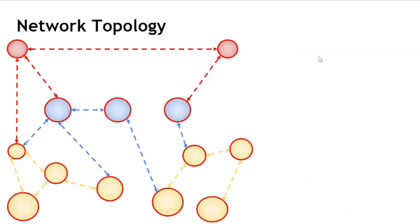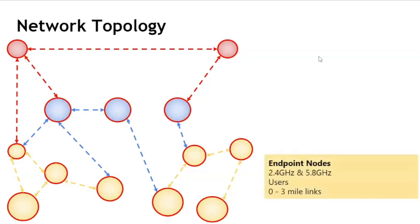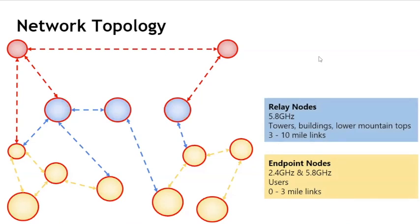Let's talk about network topology and typical frequencies. At the base are local mesh islands — that's local usage. Endpoint nodes are users like you and myself who set up our go kits and connect to other nodes. Most of the time we use 2.4 GHz and 5 GHz nodes for that, with links between zero and three miles. Zero miles means you can create a mesh with five or six people sitting around connected to mesh nodes, passing IP-based traffic. Next are relay nodes, typically on high buildings or mid-size mountaintops — between three and ten miles, usually on 5.8 GHz.